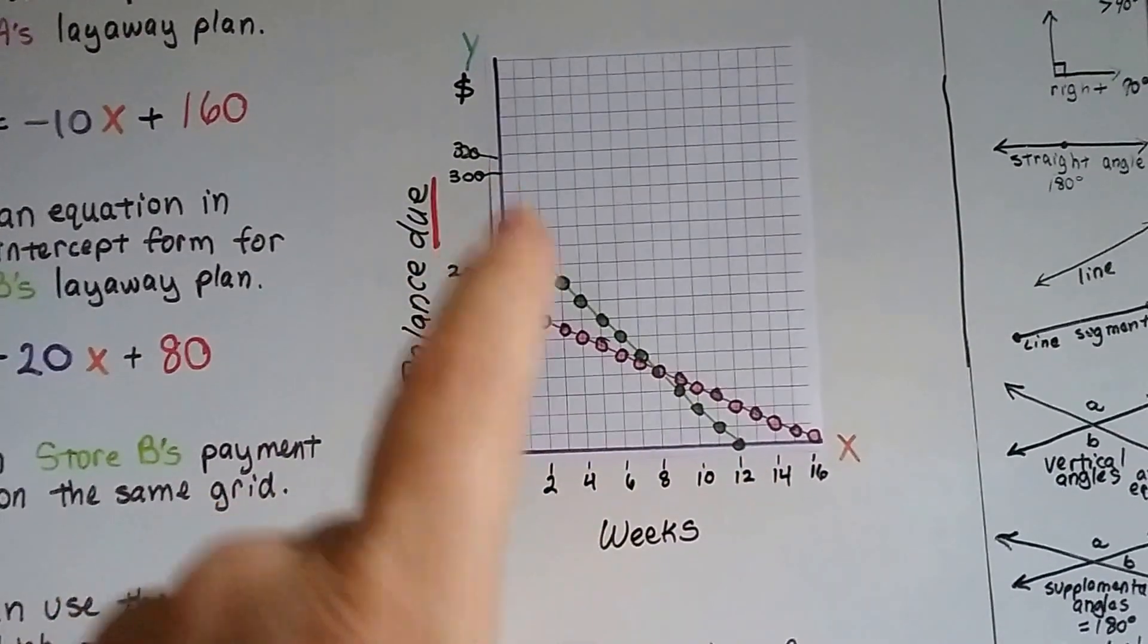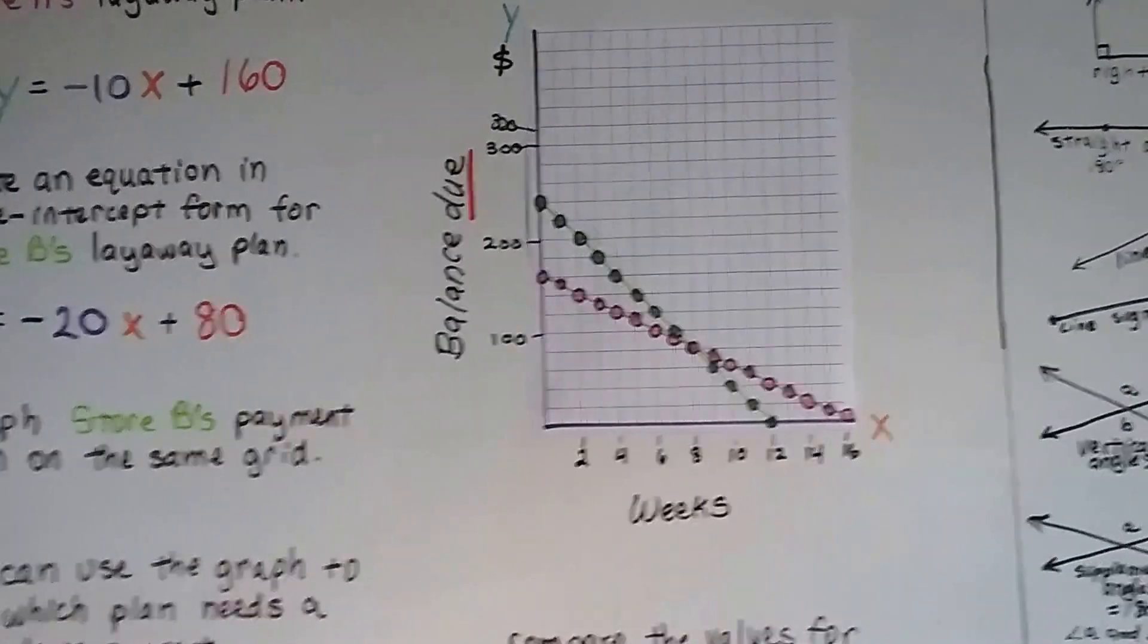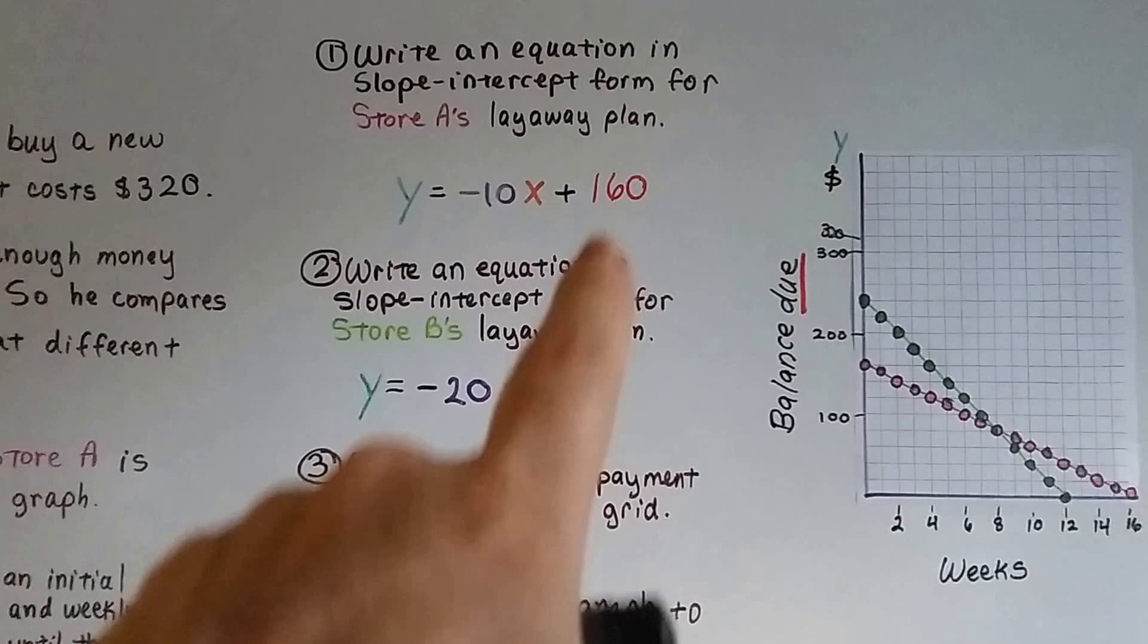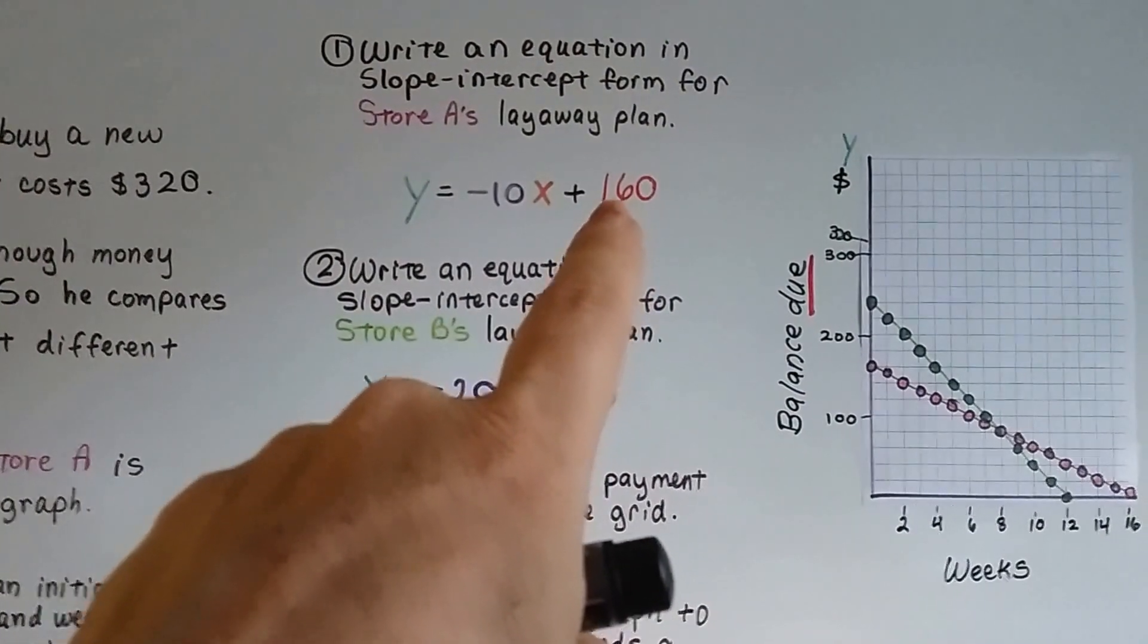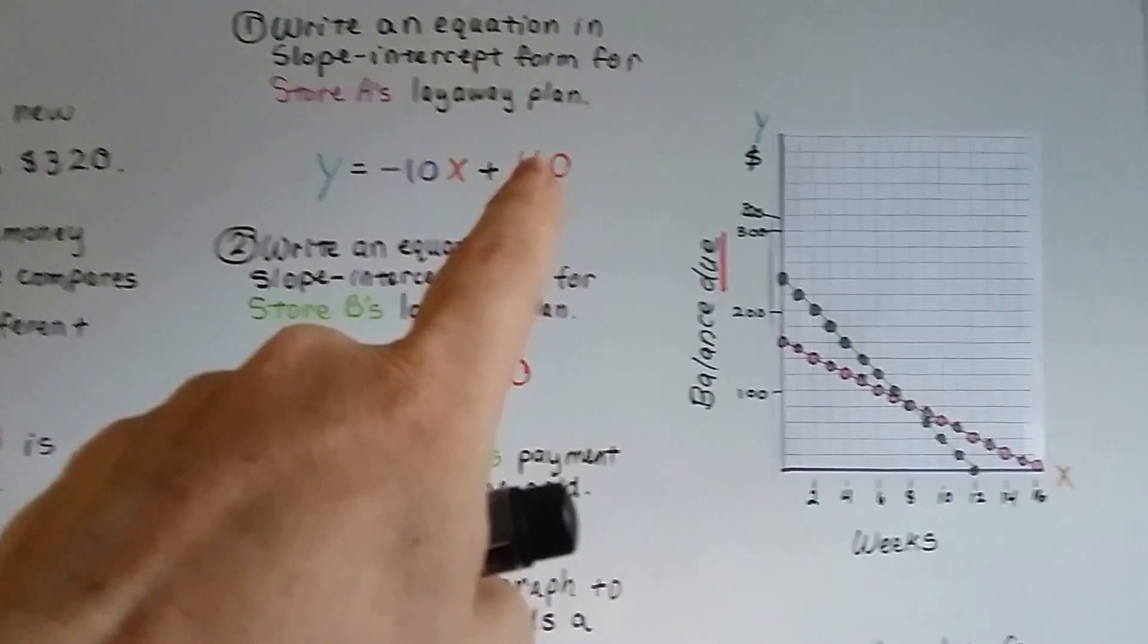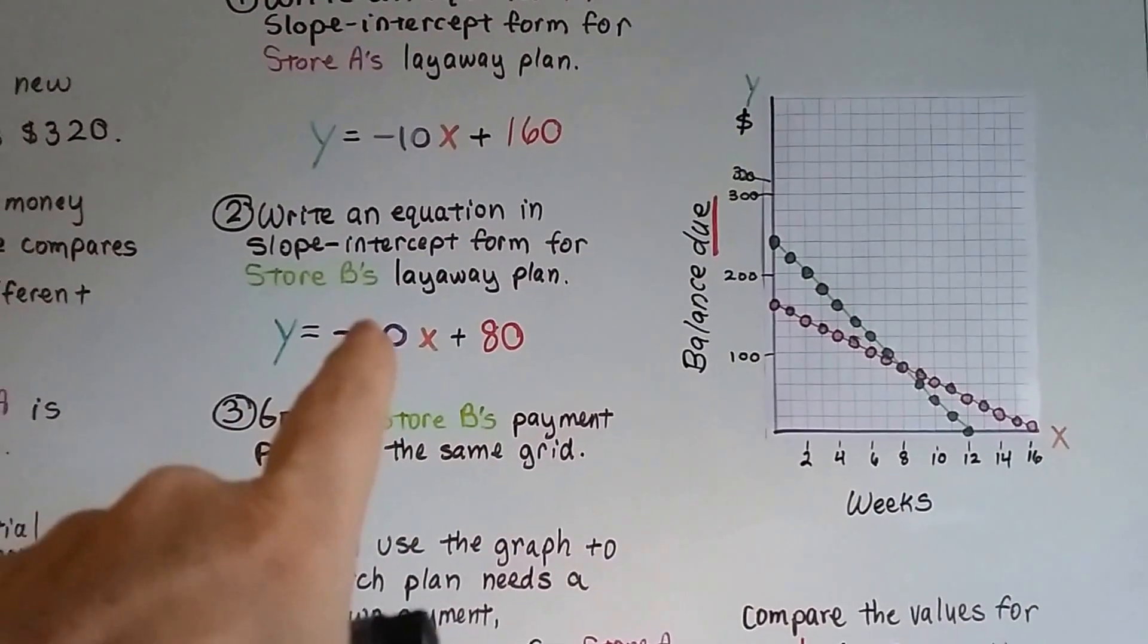So the green one, store B, he's going to get the game much quicker. He's going to have to make bigger payments. But he didn't have to make the big huge down payment that he had to make with store A. Store A has got littler payments with a huge down payment, and he's not going to get it for a long time, for another month, another four weeks.